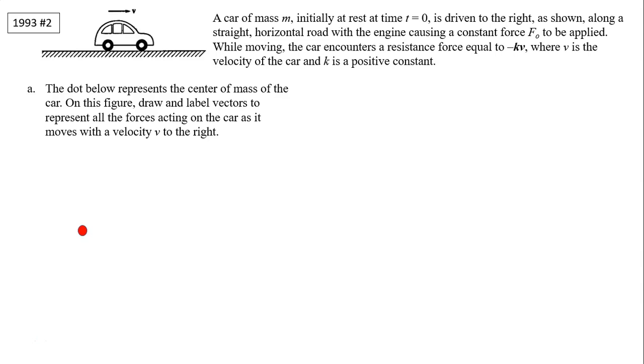Part A: The dot below represents the center of mass of the car. On this figure, draw and label vectors to represent all the forces acting on the car as it moves with velocity v to the right. As it moves to the right, we know because it's only moving in the horizontal direction, the vertical forces have to cancel out. Vertically, there is always gravity. Then because there is a road, there is normal force from the road supporting the car upward. There is applied force to the right, F0, and there is air resistance to the left. So here are the force diagrams, the free body diagrams.